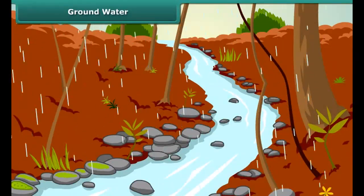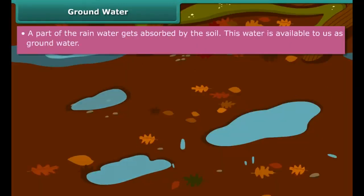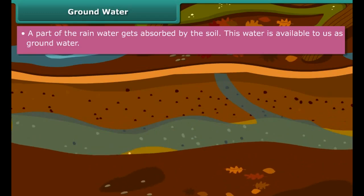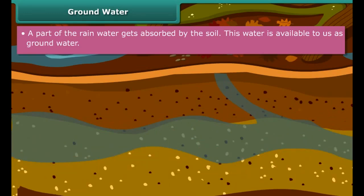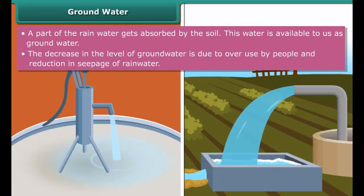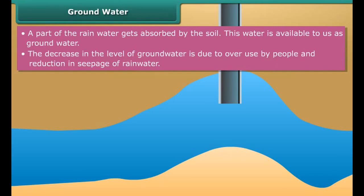Not all rainwater flows into rivers and ultimately into oceans. Some of it is absorbed by the soil — this water is known as groundwater. Groundwater is the source of water for many lakes, and wells, pumps, and tube wells tap this source for consumption. However, overuse of groundwater has led to its depletion, so we need to dig deeper and deeper to locate it.